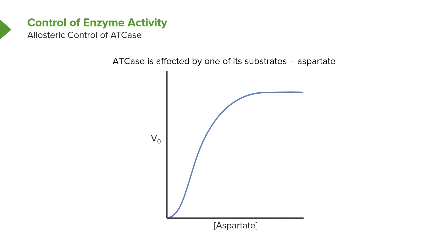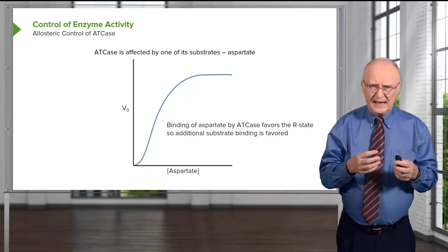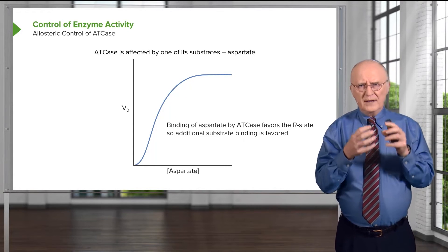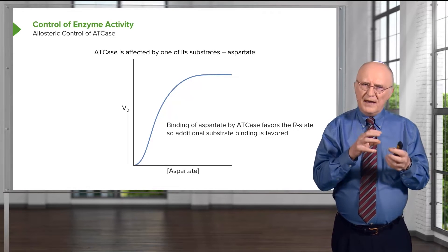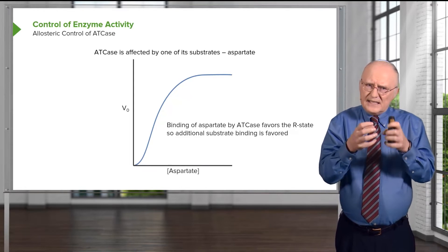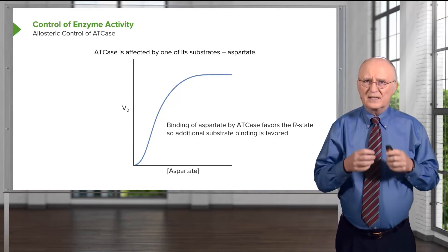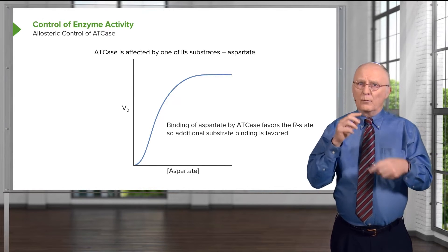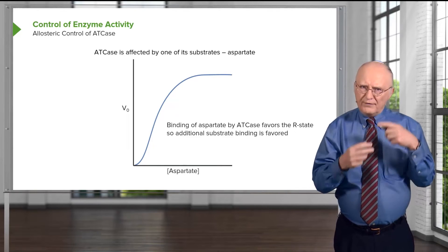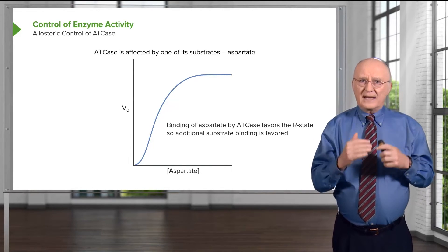It's important to remember that enzymes can exist in two different states. One state is referred to as the R state — the relaxed form of the enzyme — which favors binding of additional substrate. The other form is known as the T state, or the tight state, a tense state that will bind substrate but doesn't bind it nearly as well as in the R state. The R state is the more active form and the T state is the less active form. Note that both forms are active — it's not an on-off switch, but rather affecting the amount of activity that the enzyme has.